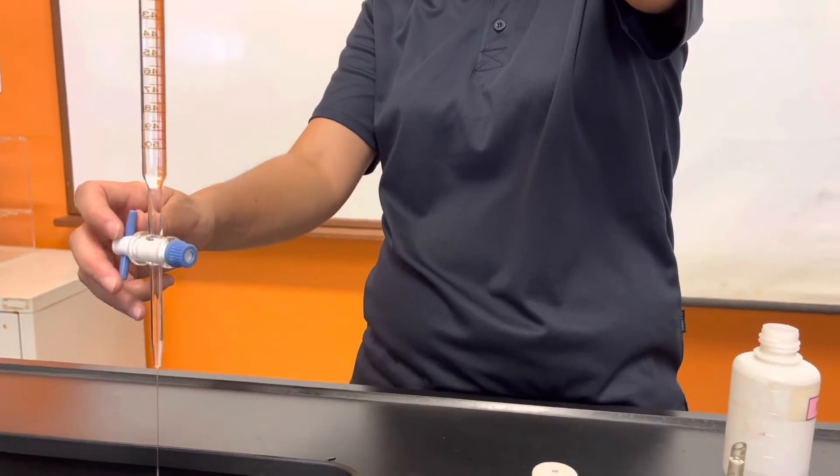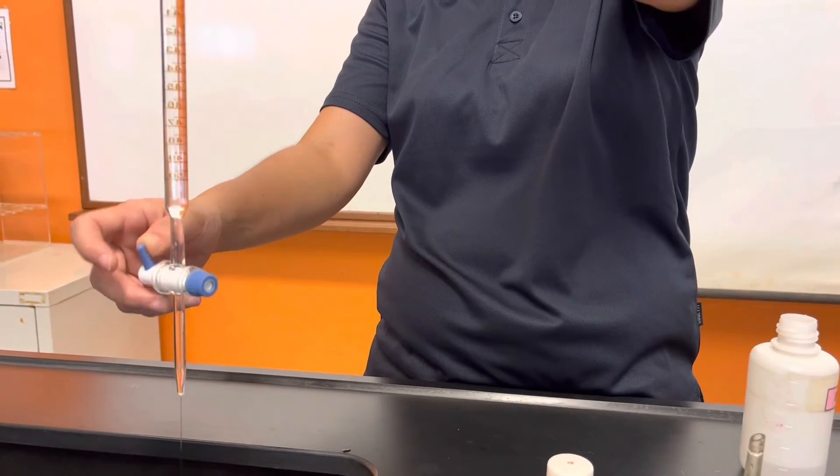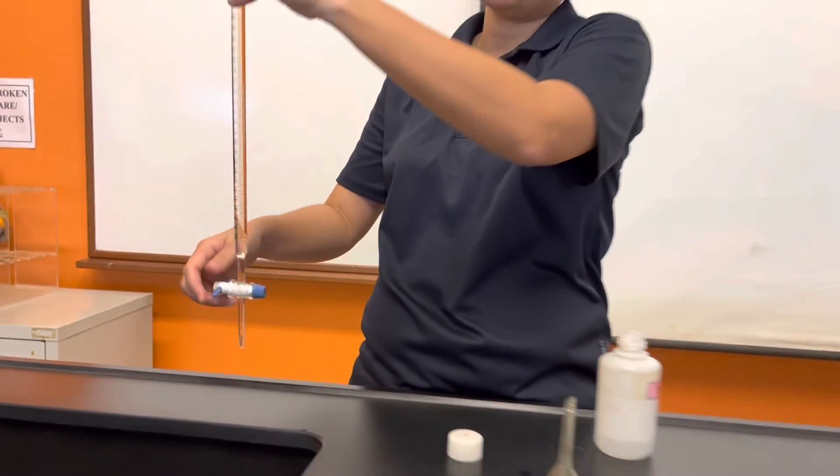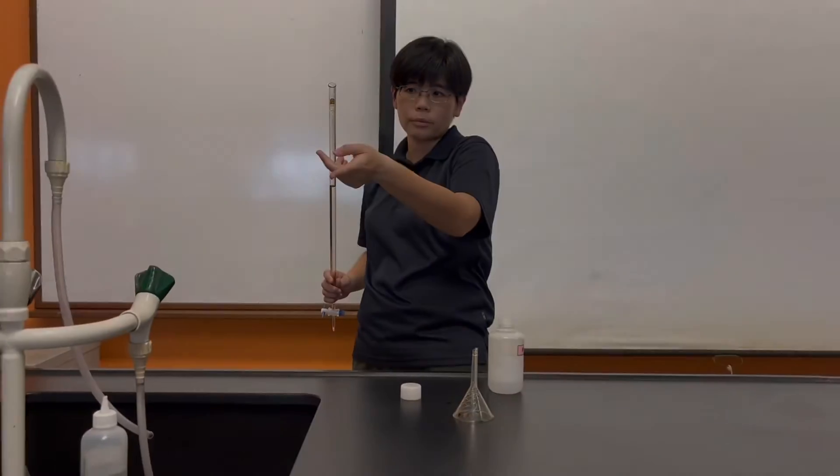A quicker way to get the solution out of the burette is to close the tap and then let the solution come out through the top of the burette.